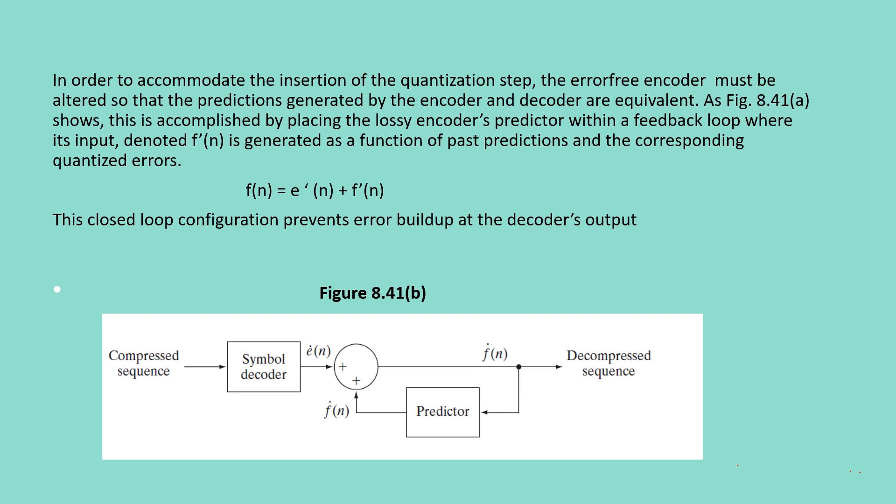In the last slide, we discussed the encoder component of lossy predictive coding. In order to accommodate the insertion of the quantization step which we did in the encoder component, the error-free encoder must be altered so that the predictions generated by the encoder and the symbol decoder are equivalent. As shown in the figure, this is accomplished by placing the lossy encoder's predictor within the feedback loop, where its input, denoted by f' of n, is generated as a function of past predictions in the corresponding quantized errors. We can write f of n is equal to e' of n plus f' of n from the diagram. This closed-loop configuration prevents error buildup at the decoder's output, which is the decompressed sequence.